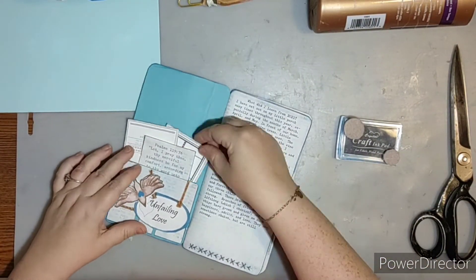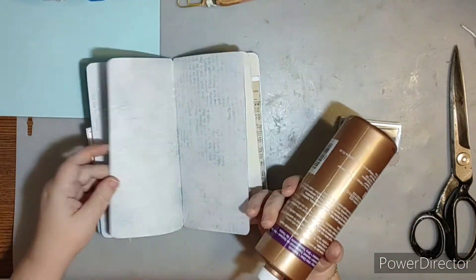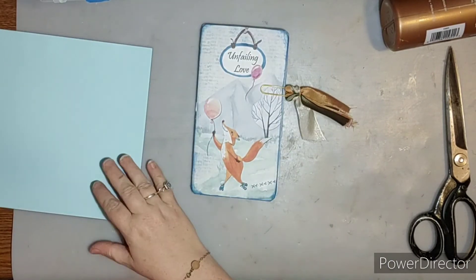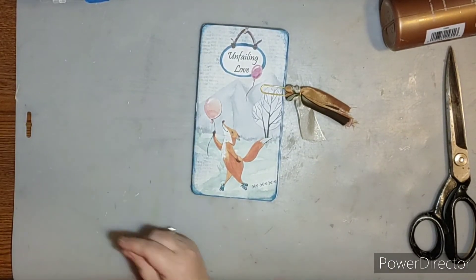So there you go. I hope you enjoyed this video on how I made this Simple Traveler's Notebook journal for the Unfailing Devotional for the month of February. Check out the links down below.